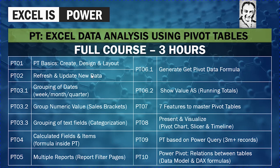PT04 discussed calculated fields and items — inserting formulas inside pivot tables. PT05 showed how to use the report filter pages option to produce multiple reports from one pivot table. PT06.1 covered how to use the GETPIVOTDATA formula and a related topic on using 'Show Value As' to produce running totals.